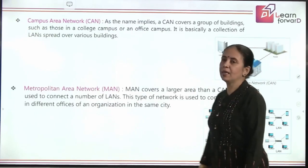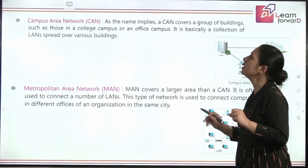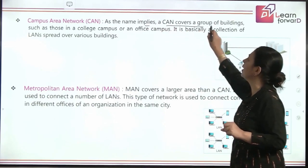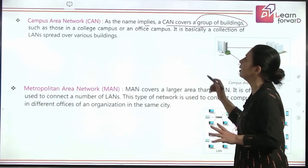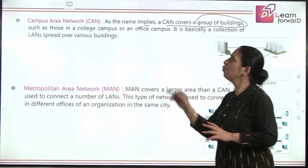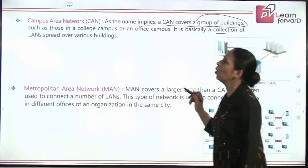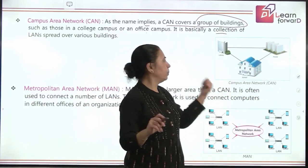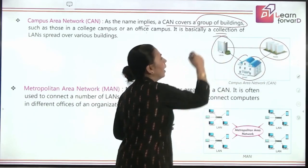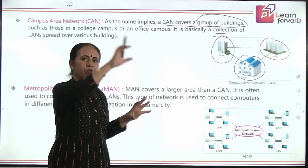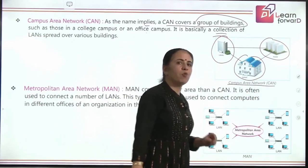Coming to Campus Area Network (CAN), big organizations, big schools, and colleges have their own entire campus. As the name implies, CAN covers a group of buildings — group of institutes, colleges, and office campuses. It is basically a collection of LANs spread over various buildings. So if you have one building, a hostel, a library, and different buildings across an entire campus, and you want networking done across all of them, we use a campus area network.